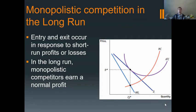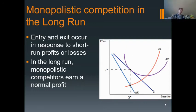If firms are earning profits, then new firms will enter the market — kind of makes sense, it's exactly the same thing that was happening with perfect competition. As new competitors enter the market, they will take away some of the market share that the individual firms used to have. So if you were looking at a monopolistic competitor that was earning profits and new firms enter the market, demand for that firm's product and marginal revenue along with it will shift to the left.